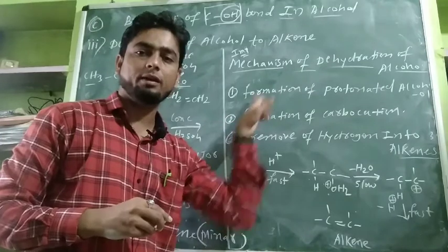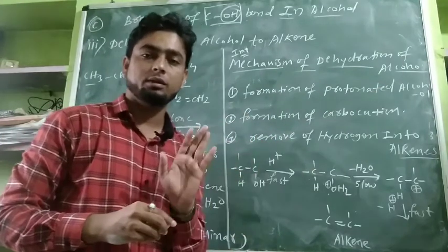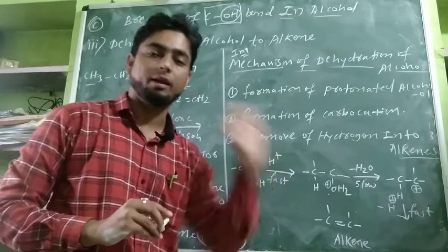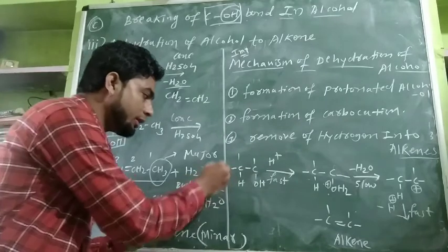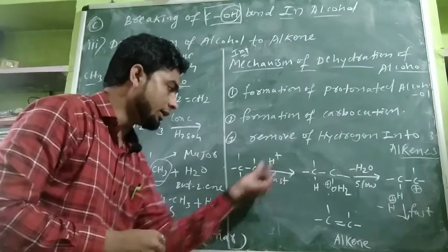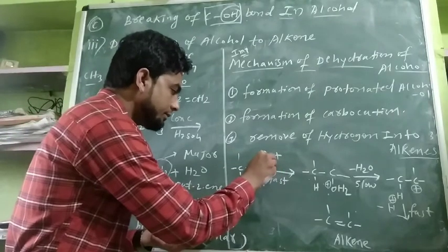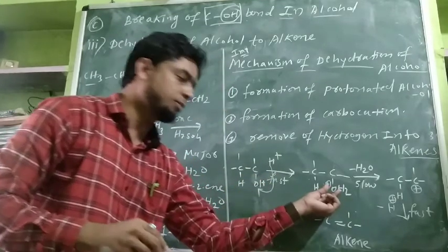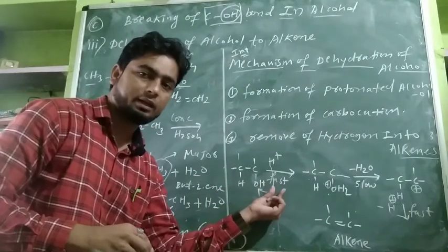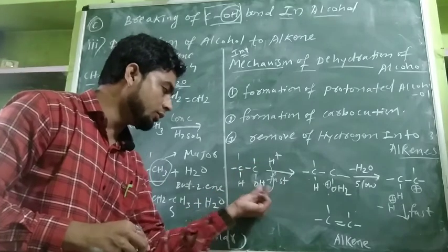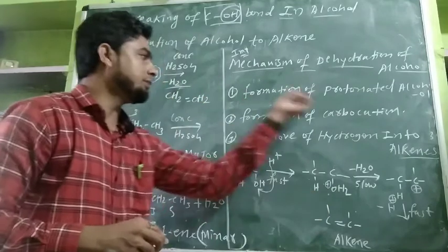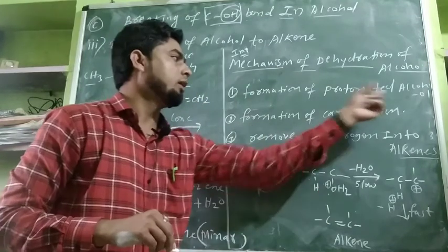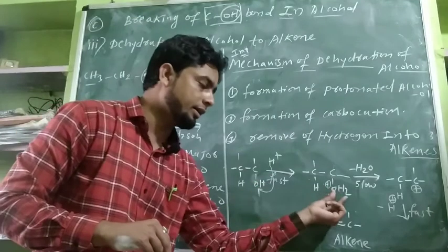First step: formation of protonated alcohol. Any alcohol which gains a proton — a hydrogen — is called protonated alcohol. The concentrated H2SO4 donates a proton (H+) to the oxygen of the OH group. The oxygen, which has an OH group, catches the hydrogen atom. What we get is an -OH2+ group, and this compound is called the protonated alcohol. This first step is fast.